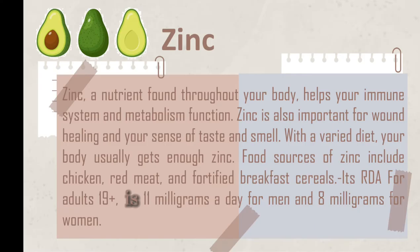Next is zinc. Zinc is a nutrient found throughout your body. It helps your immune system and metabolism function. Zinc is also important to wound healing and your sense of taste and smell. With a varied diet, your body usually gets enough zinc. Food sources of zinc include chicken, red meat, and fortified breakfast cereals. Its RDA for adults is 11 mg a day for men and 8 mg for women.